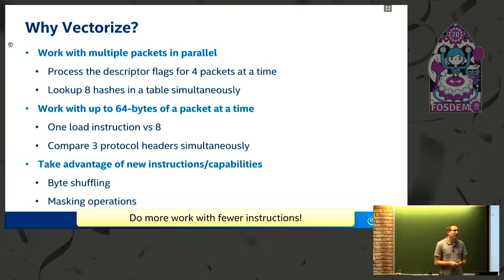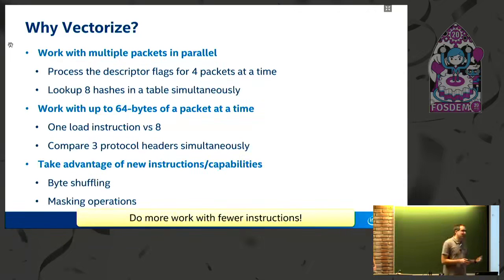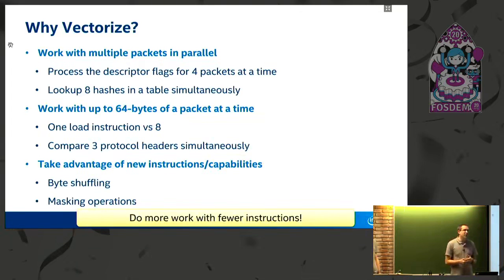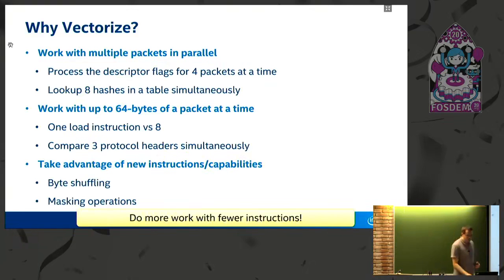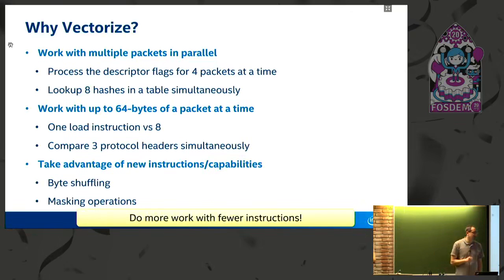Most interestingly, it also opens up new possibilities — new ways of doing things — taking advantage of novel instructions that these vector instruction sets provide. For example, byte shuffling, where we change the order of bytes within a register, is something you can't really do efficiently in scalar code. With vector code, you can do a lot of shuffling really quickly. In AVX-512 there's also K-Mask, which allows masking operations to work with partial registers simultaneously. The overall upshot is that these AVX and SSE instructions allow you to do more work per instruction — more bang for your buck from your CPU.